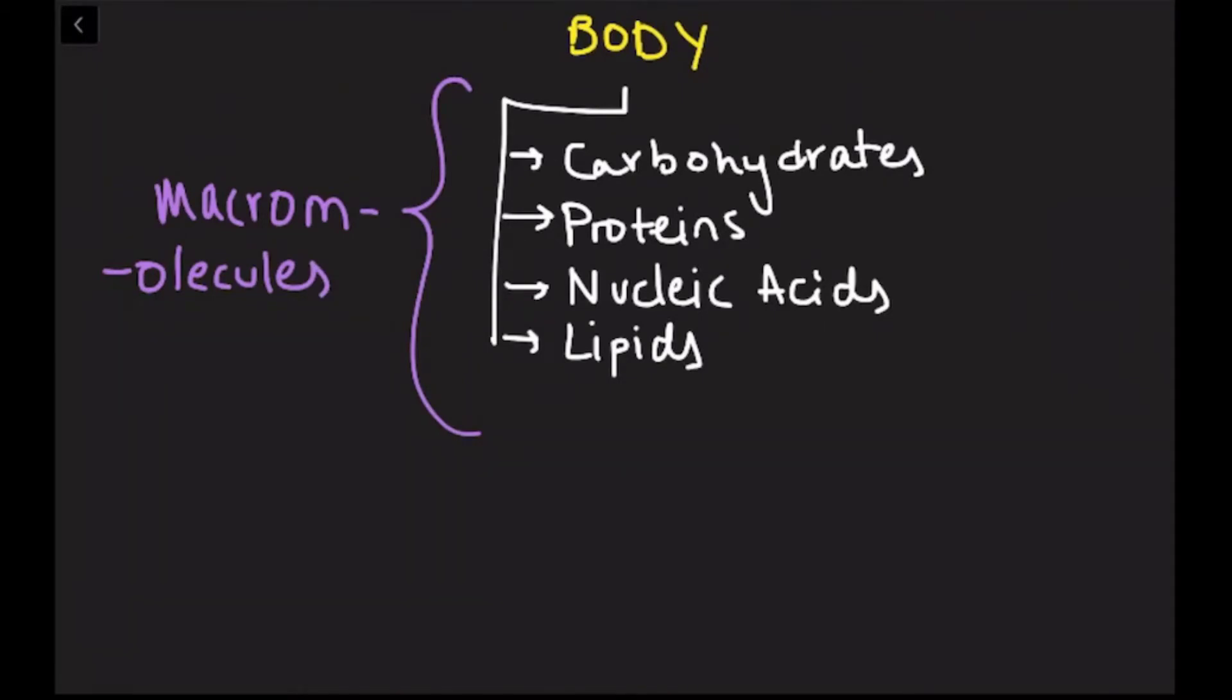Three of these classes, carbohydrates, proteins, and nucleic acids, are known as polymers. A polymer is basically a substance that is made of identical and repeating building blocks that are covalently bonded to each other.